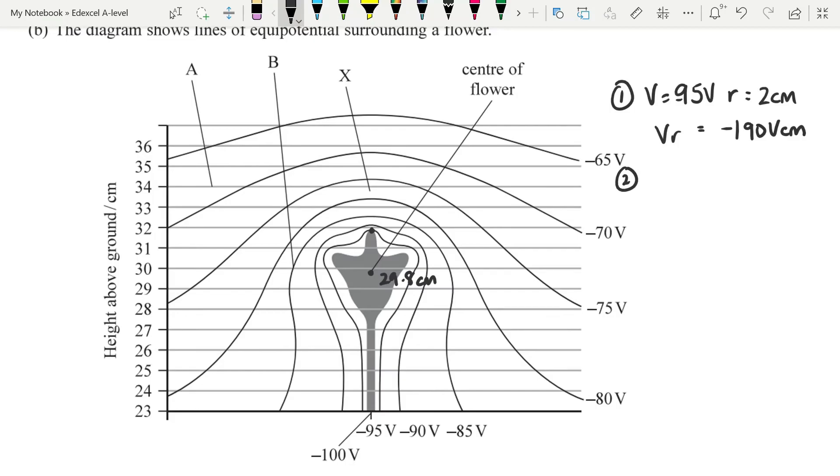Second one, I'm just going to go up to the 90 line, which is there. And again, measuring from the center of the flower, that looks to me to be about 0.3 centimeters above. So our V is now minus 90. And our R is 2.3 centimeters, giving a Vr of minus 207 volt centimeters. So, so far, it's not looking good for being a radial field. Let's keep going.